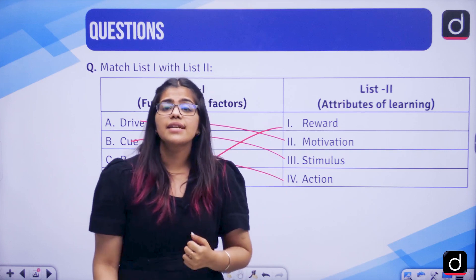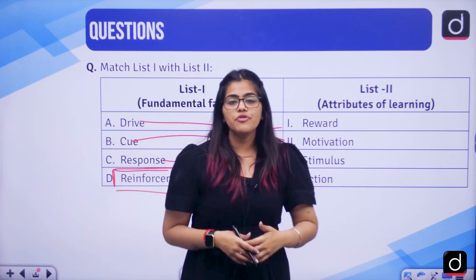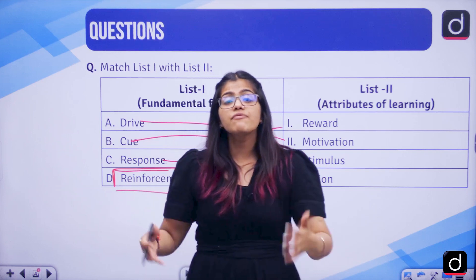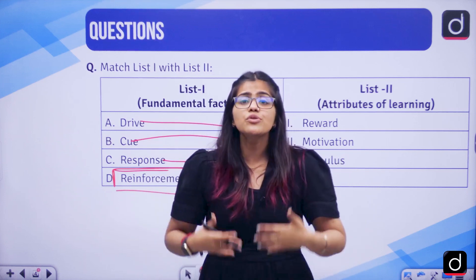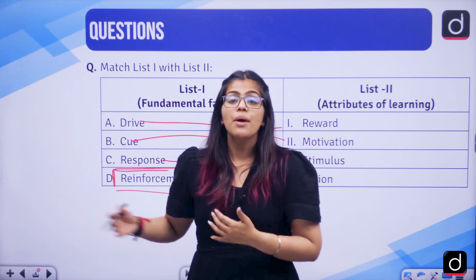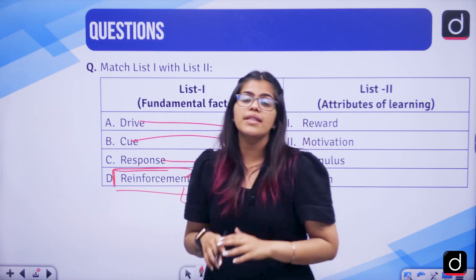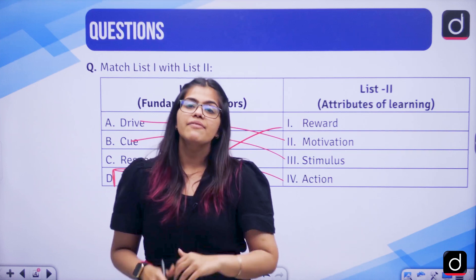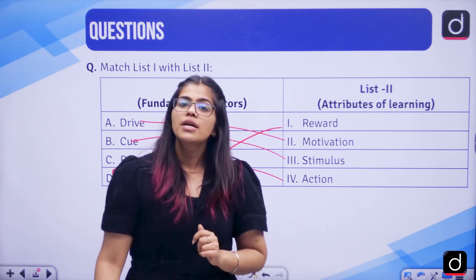B.F. Skinner said that if you give remuneration, if you give reward to someone, if you give them reinforcements, they will tend to do those things again and again. But if you scold them, if you punish them, then they will stop doing that particular thing.